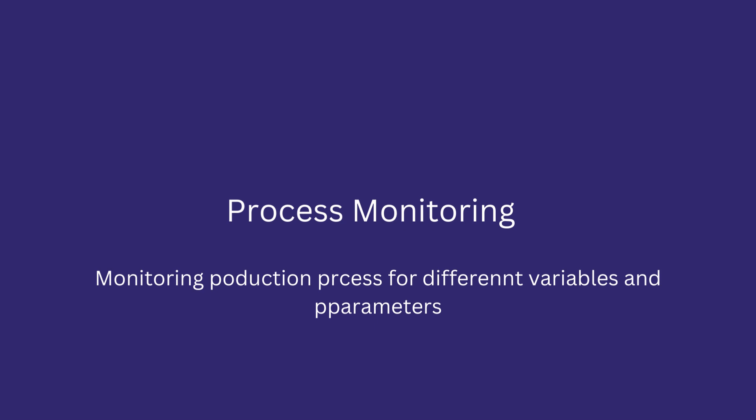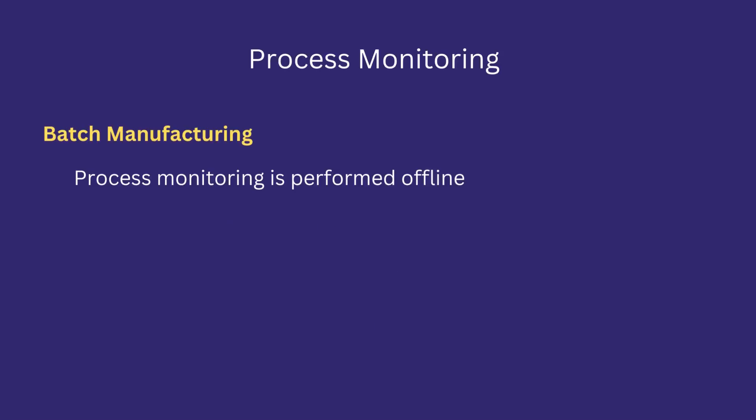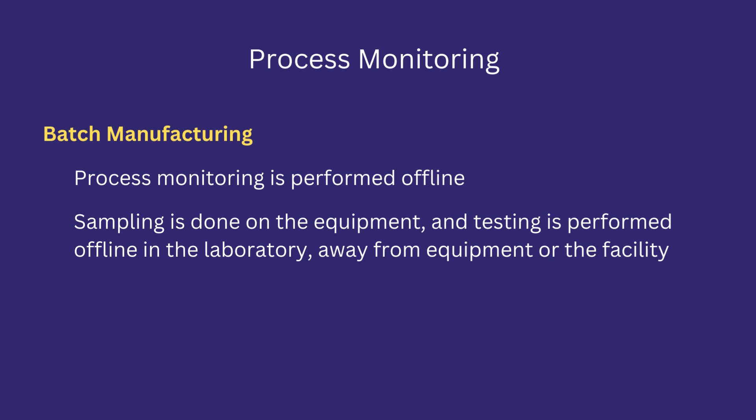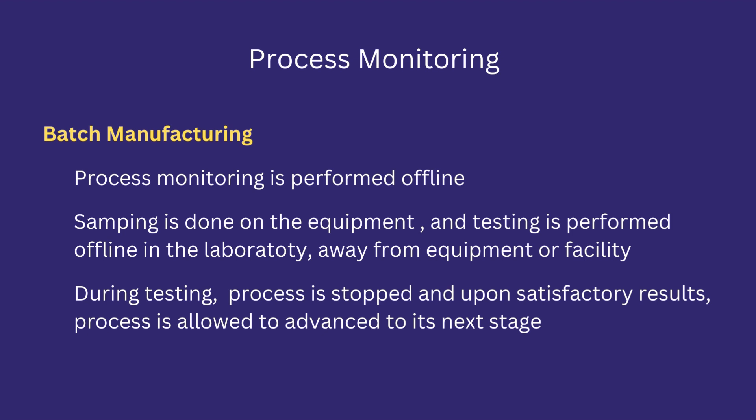Process monitoring means how the production process is monitored for different variables and parameters. In batch manufacturing, process monitoring is offline, at each individual stage. Sampling is done on the equipment and testing is performed offline in the laboratory, away from the equipment or facility. During testing, equipment is stopped and upon satisfactory results, the process is allowed to advance to its next stage. The production process does not advance during sampling and testing until final results are determined.